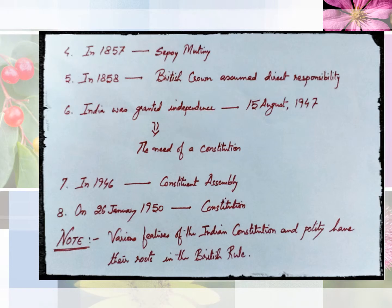In 1857, the Sepoy Mutiny occurred. This was a major event and is known as the First War of Independence. In this mutiny, the Sepoys wanted independence from British rule, which hampered British ruling. As a result, in 1858 the British Crown directly assumed responsibility over Indian territory and the East India Company was suppressed and removed. India was granted independence on 15th August 1947.